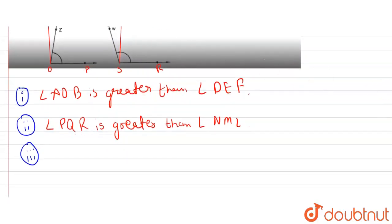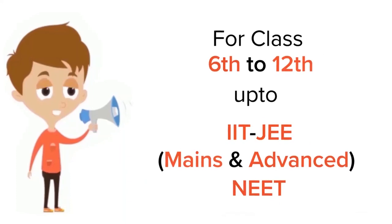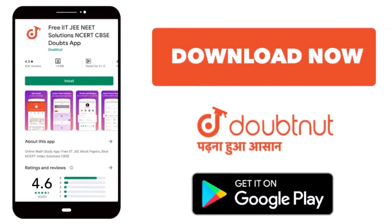Therefore, angle WSR is greater than angle ZOP. Thank you. For class 6 to 12, IIT JEE and NEET level, trusted by more than 5 crore students — download DoubtNet app today.